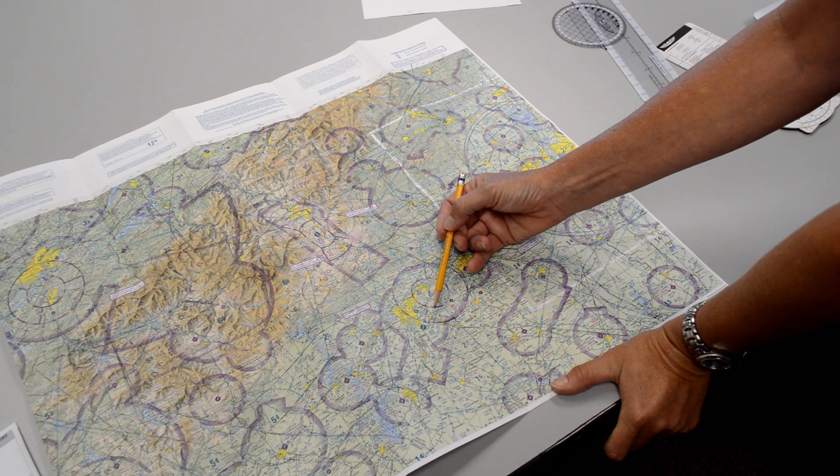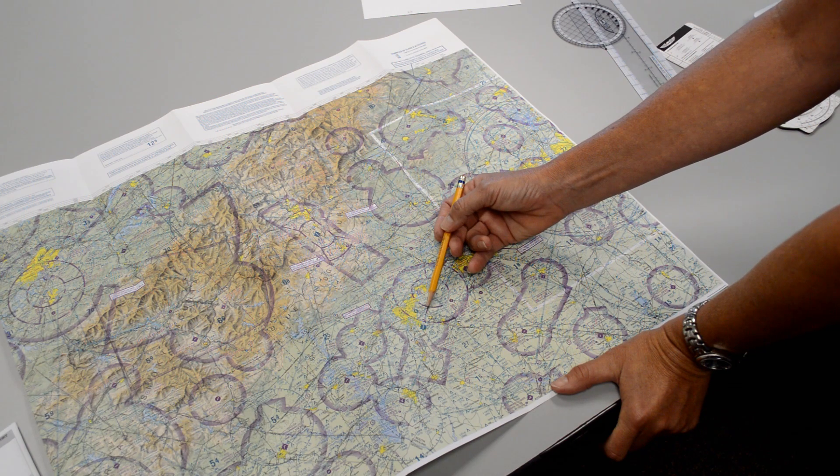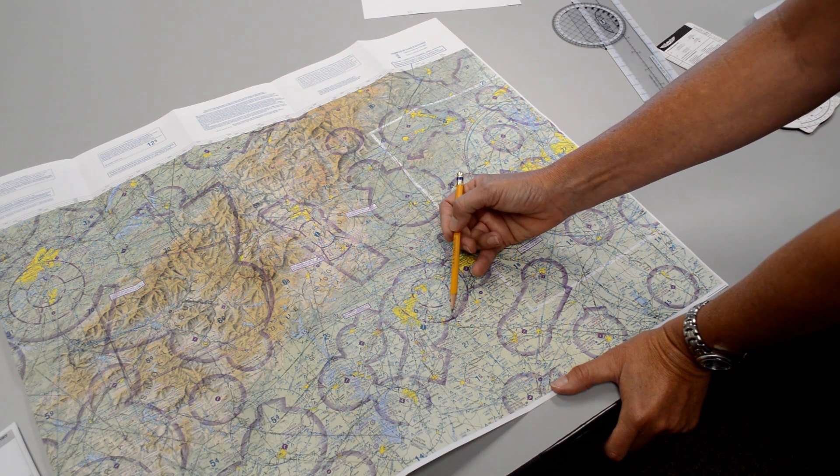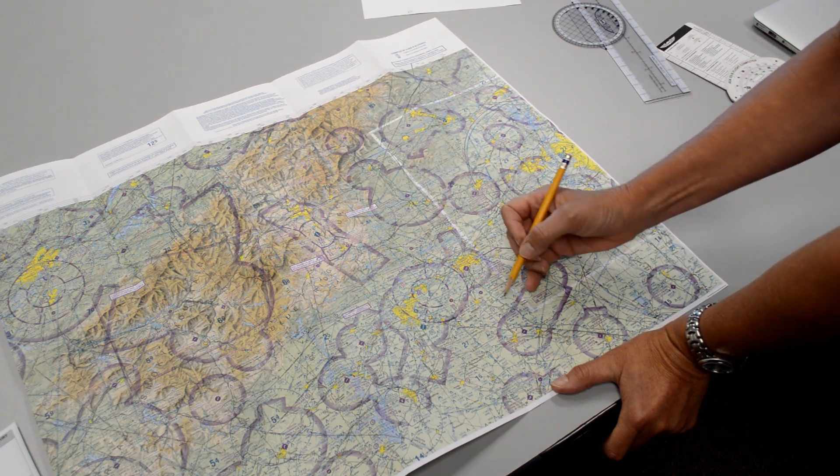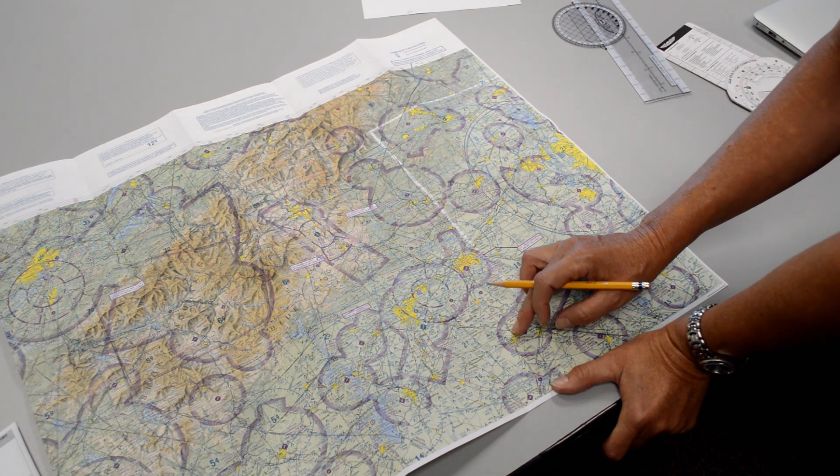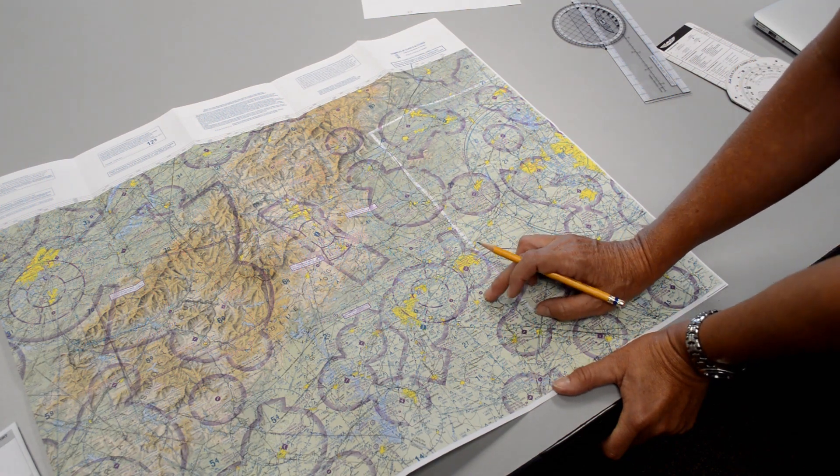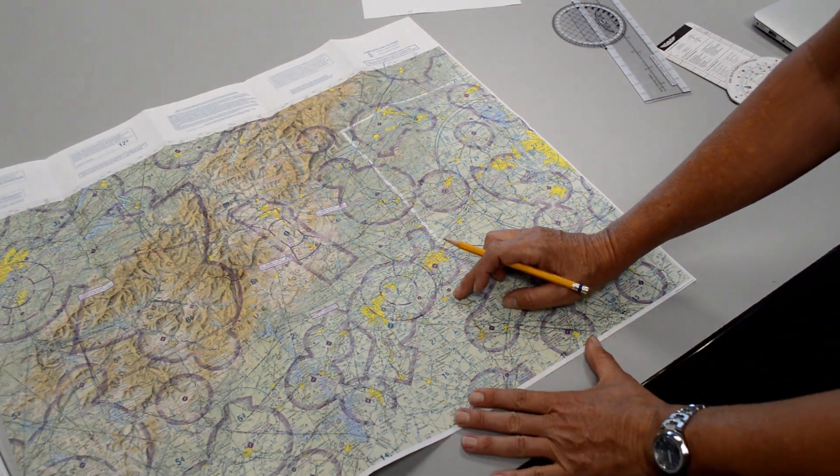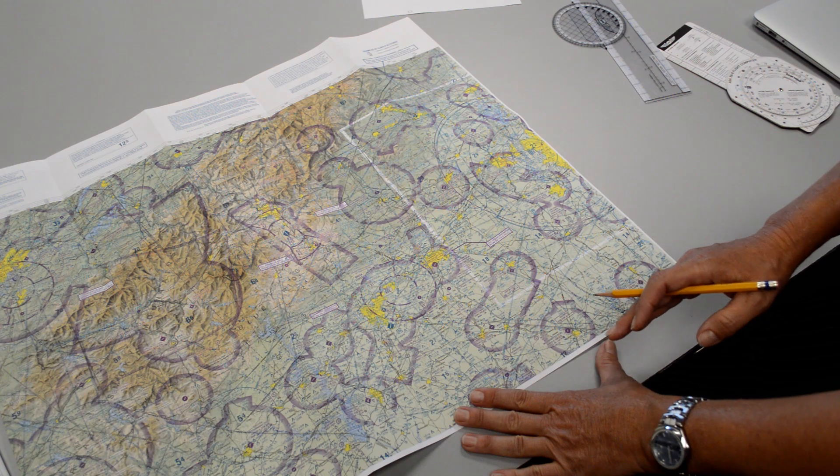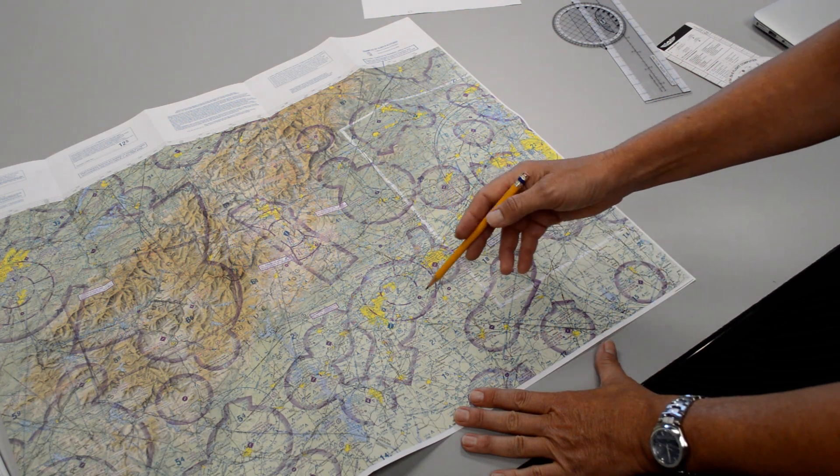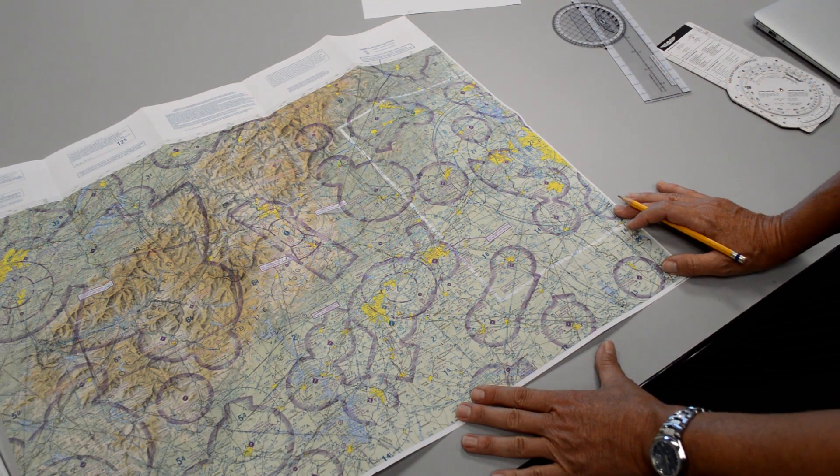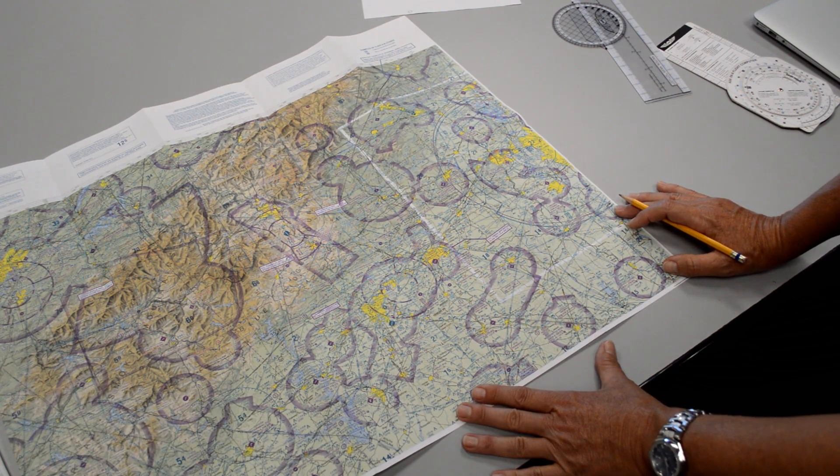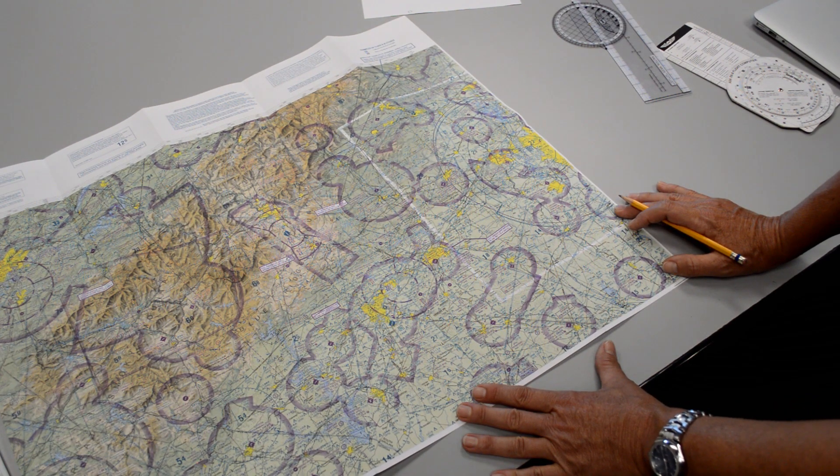The other thing I may want to look at is of course any special use airspace, any terrain such as mountains, are there any antennas and also can start getting an idea of what I'm going to end up using for my checkpoints. So any kind of cities or railroad track crossings or interstates or anything like that. I just want to definitely look over my line that I've drawn to make sure that I'm not going to go into any airspace that I didn't mean to fly into.